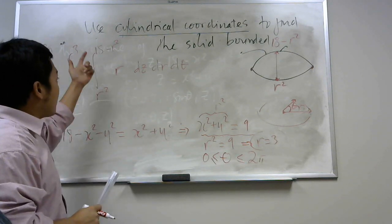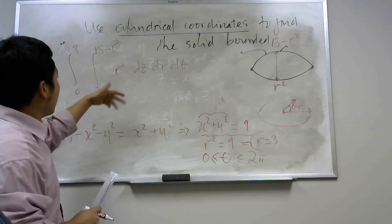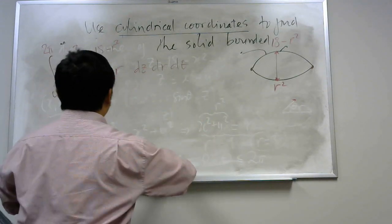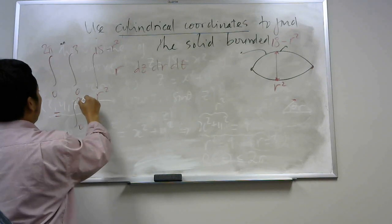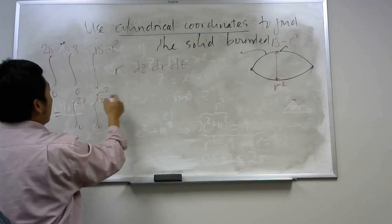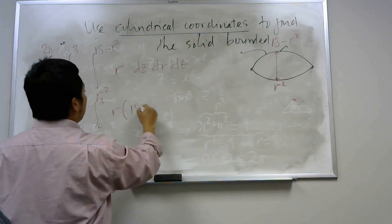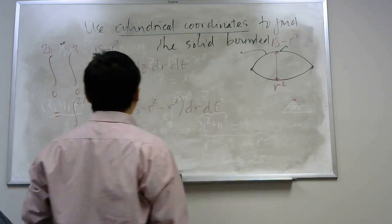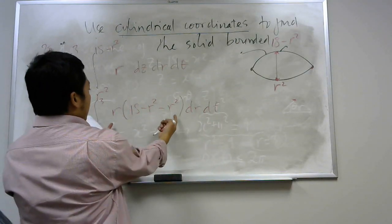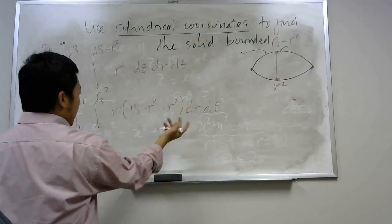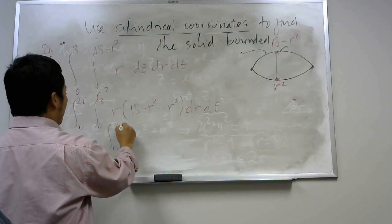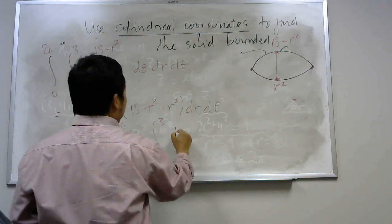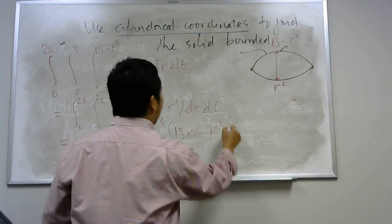So you just integrate this. When you integrate dz, and here you don't have any z, the inside integral equals the integral from 0 to 2π and from 0 to 3 of r times (18 - r² - r²) dr dθ. So basically, your function depends only on r. So you can write separate integrals: integral from 0 to 2π of dθ, and then integral from 0 to 3 of (18r - r³) dr.